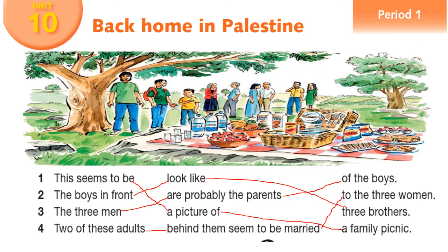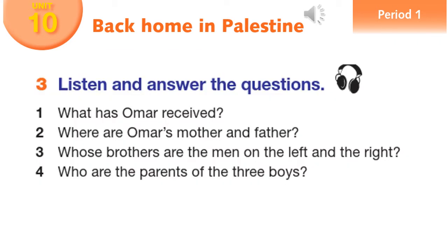Now let's go to listen. Before starting the listening, read the questions. Period 1, Activity 3. One: What has Omar received? Two: Where are Omar's mother and father? Three: Whose brothers are the men on the left and the right? Four: Who are the parents of the three boys?